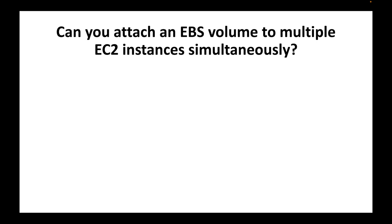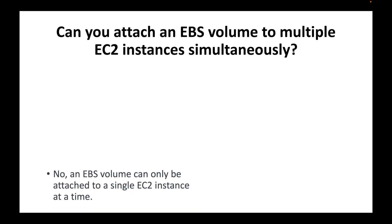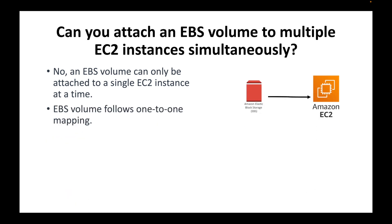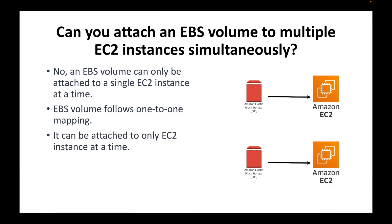The next question is: can you attach an EBS volume to multiple EC2 instances simultaneously? The answer is no. An EBS volume follows a one-to-one mapping — one EBS volume can only be attached to one EC2 instance at a time. If you want to attach it to another instance, you must first detach it from the existing instance. That covers the 10 common interview questions for part one.